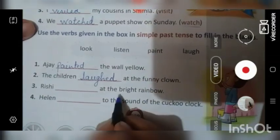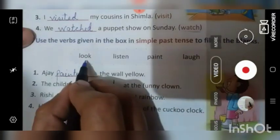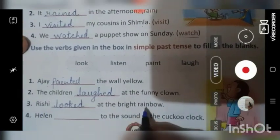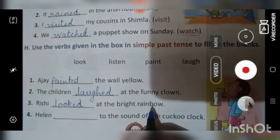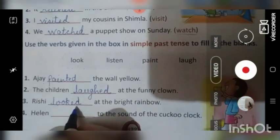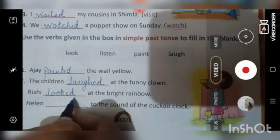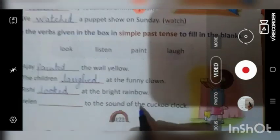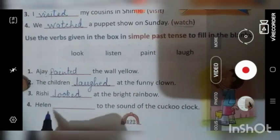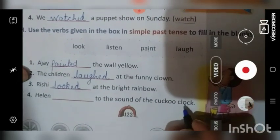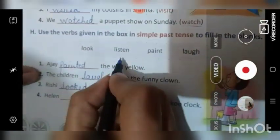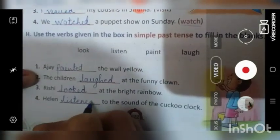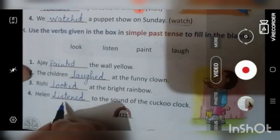Rishi dash at the bright rainbow. Rishi looked. Look means dekhna. Looked. Rishi bright rainbow ki taraf. Dekh raha hai nahi. Dekh raha tha. Kyunki hamnne action word mein ED lagaya hai. Isko simple past tense mein kiya hai. Halen dash to the sound of cuckoo clock. Halen nne cuckoo clock ki sound ko sunna tha. Toh sunne ki English hoti hai listen. Ab past tense mein hamnne kya karenge. Listen ke aage ham ED laga denge. Toh it will become listened.